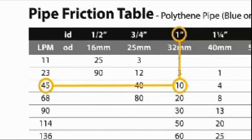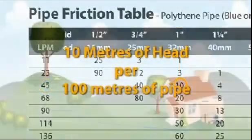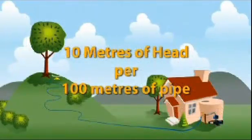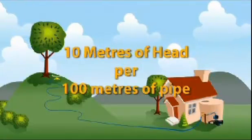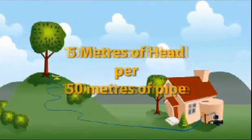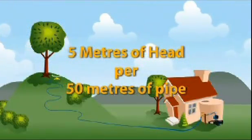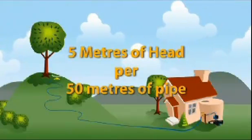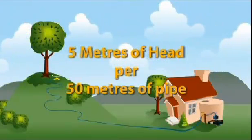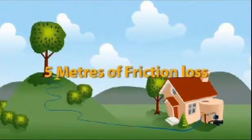We can see that there will be 10 metres of pressure lost to friction. However, as we know, in this chart, all values apply to 100 metres of pipe. In Aunty Flo's case, she only requires 50 metres of pipe. Therefore, we must halve the value. Half of 10 is 5. 5 metres is therefore our friction loss.